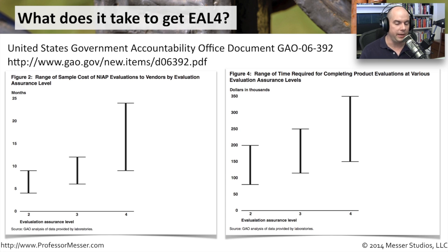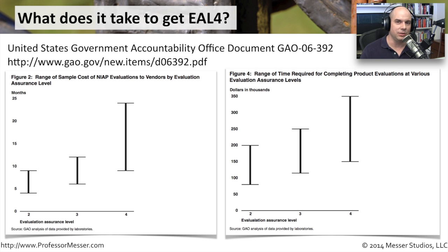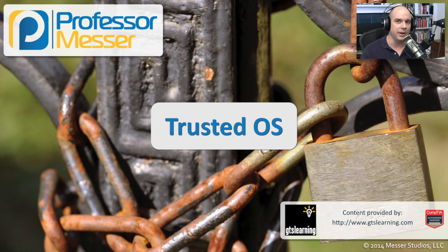And it doesn't come cheap. For EAL2, you're spending anywhere from about $75,000 up to $200,000. For EAL4, it's $150,000 up to $350,000 to get that certification completed. Obviously, manufacturers putting their devices through this certification are doing it because the federal government needs very, very secure systems. That's why you see not only the government using these EAL certifications, but also private organizations — they'll look at the testing the government did and say, if they spent all that time and money evaluating it, we can also be sure that the operating systems we're going to use are trusted operating systems.